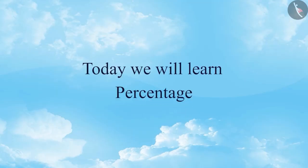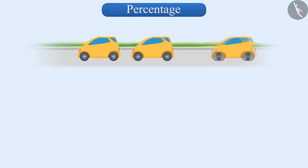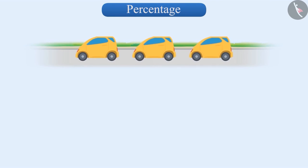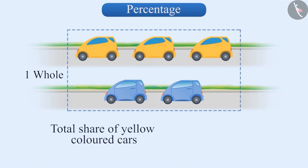Today, we will learn about percentage. Here, we have three yellow cars and two blue cars. If we consider a total of five cars as a whole, then what part of the total cars do the yellow cars constitute?